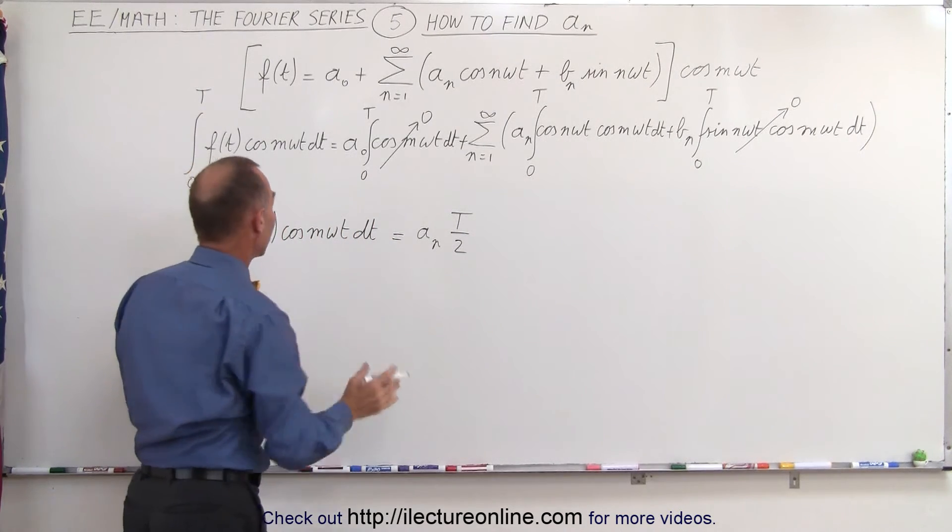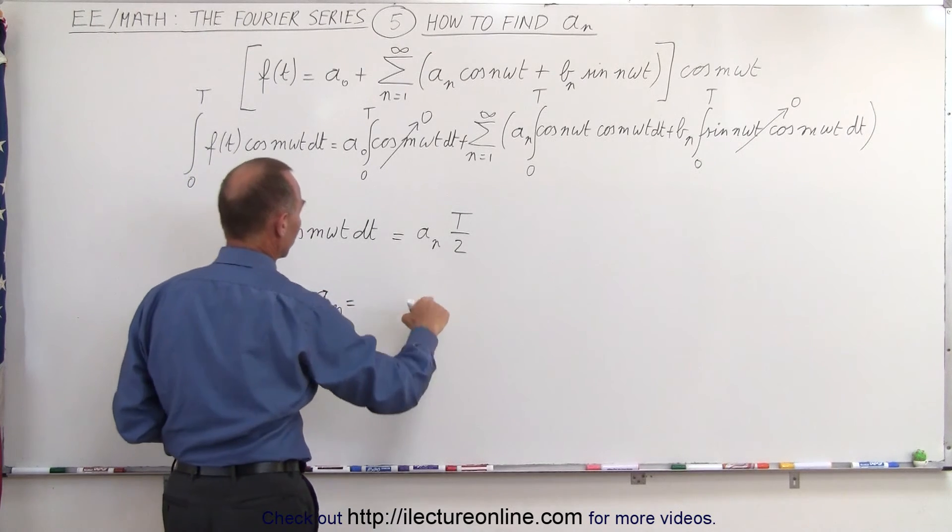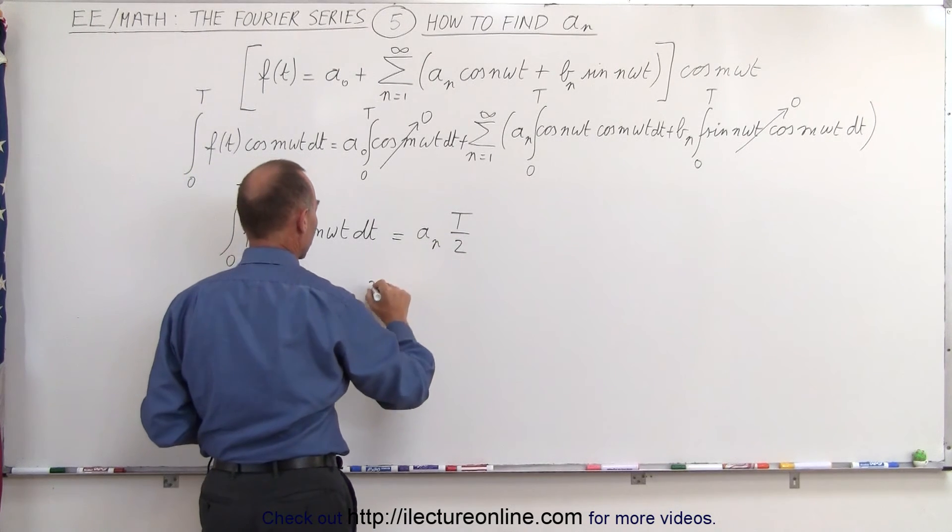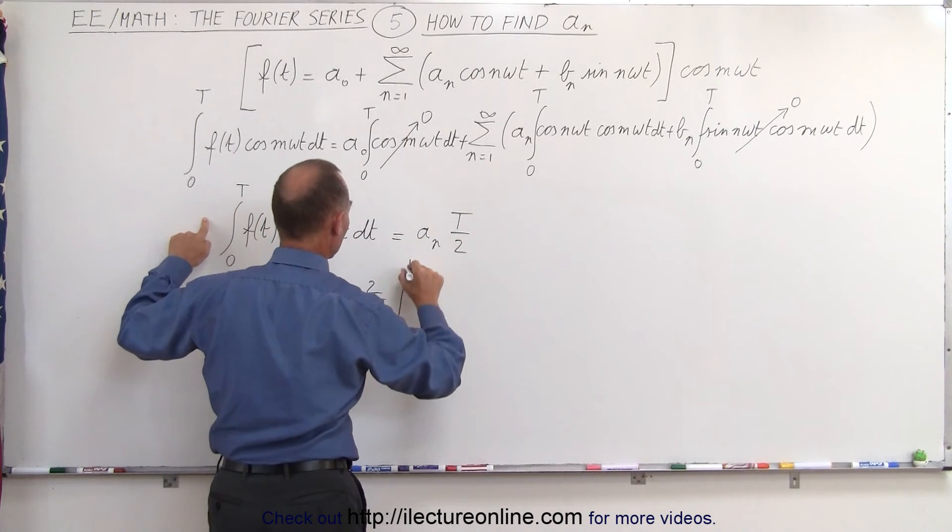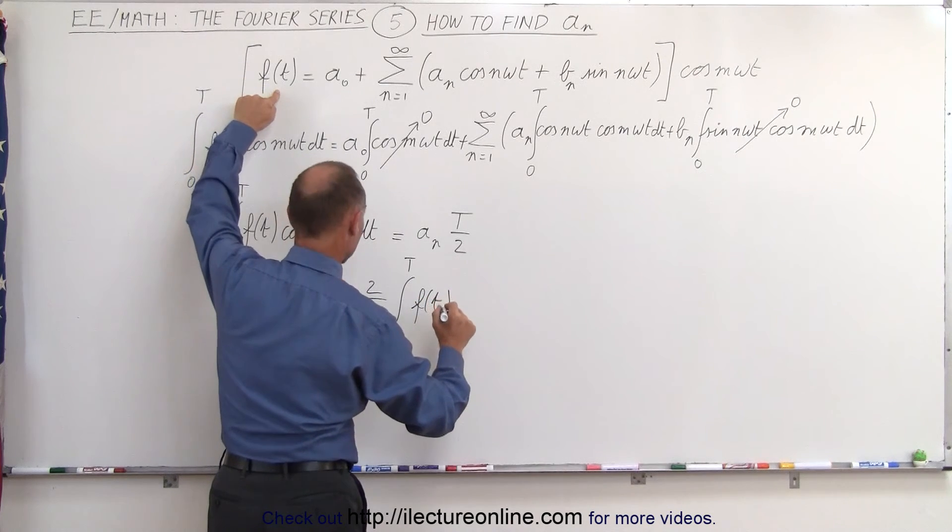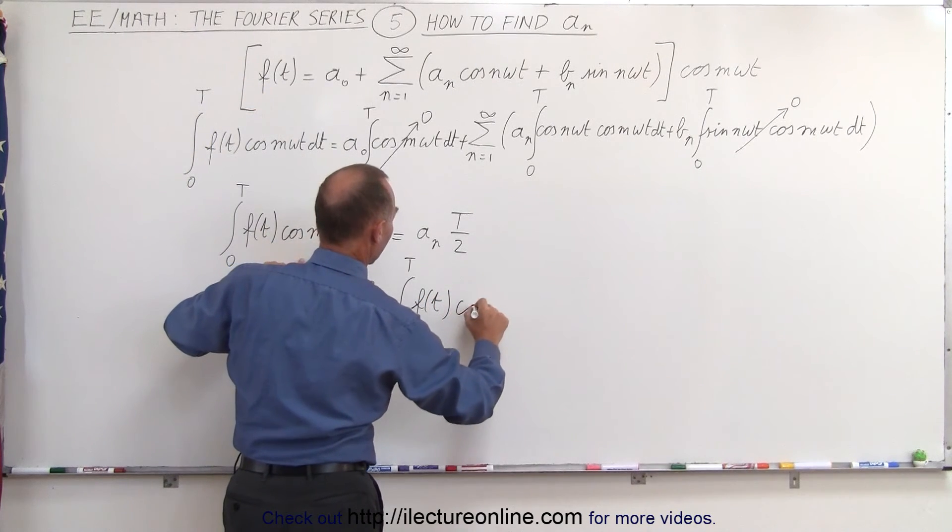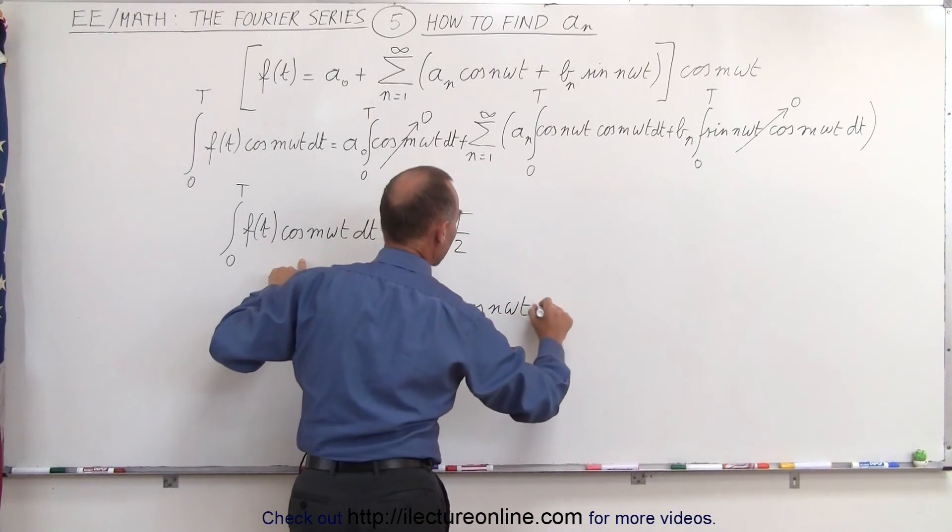Now, all we have to do is solve this for a sub n, which means that a sub n is equal to, multiply both sides by 2 over t, times the left side, which is the integral from 0 to t of f of t, the original function right here,